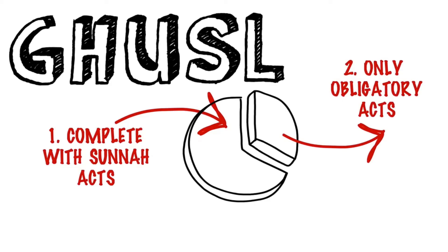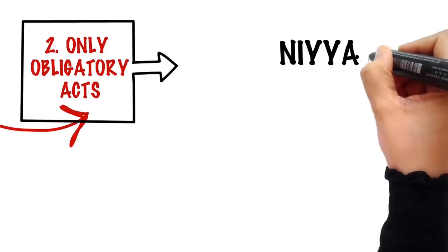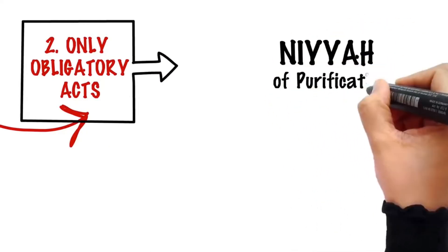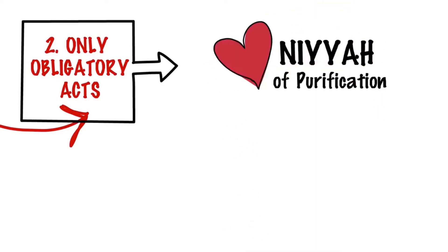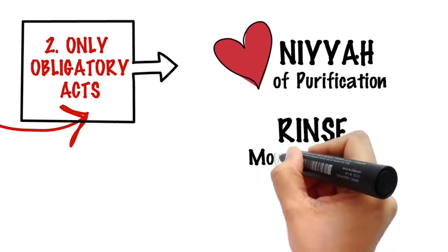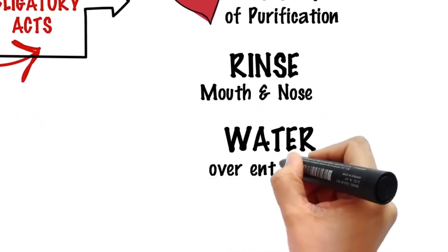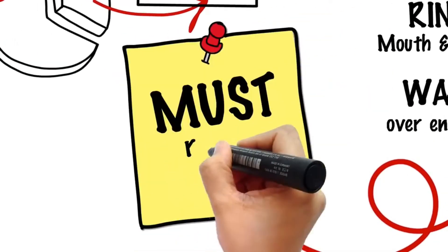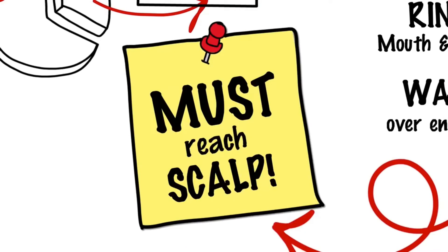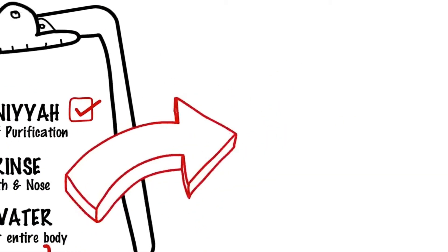So what are the obligatory acts of Ghosli? First, a beforehand niyyah - the intention that you are taking this bath to purify yourself from the major ritual impurity. Then, rinsing your mouth and nose, and letting water run over your entire body at least once. Make sure it reaches every part, even your scalp under thick hair. If you manage to do this much, then you have purified yourself from the major ritual impurity.